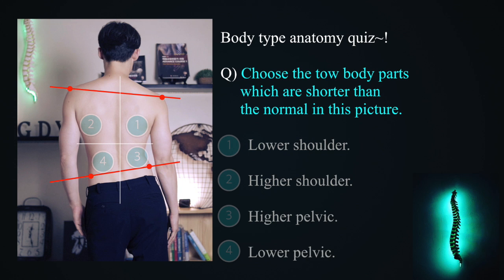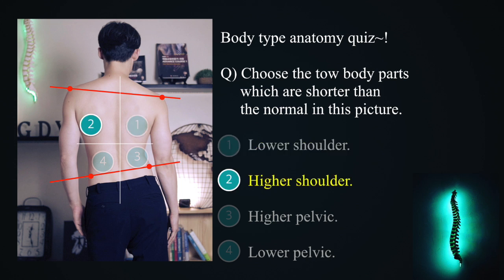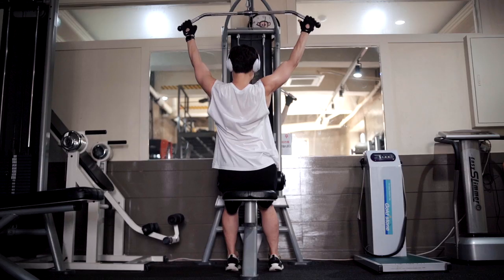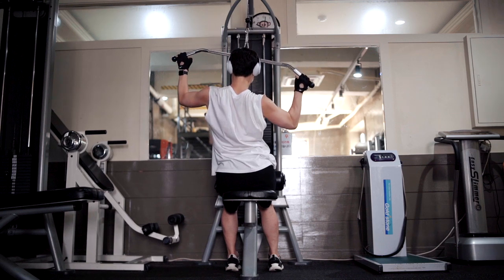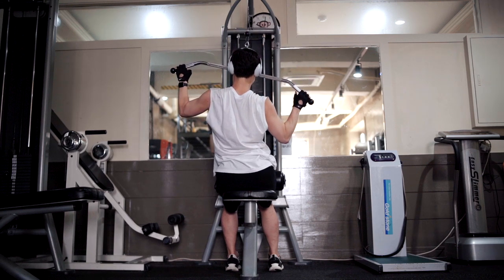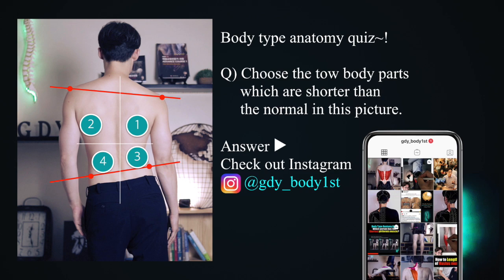Choose the two body parts which are shorter than normal length in this picture. First, lower shoulder. Second, higher shoulder. Third, higher pelvic. Fourth, lower pelvic. Do not just sit there and watch — act on it.